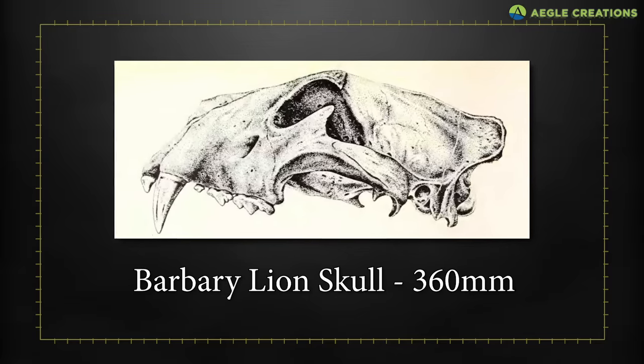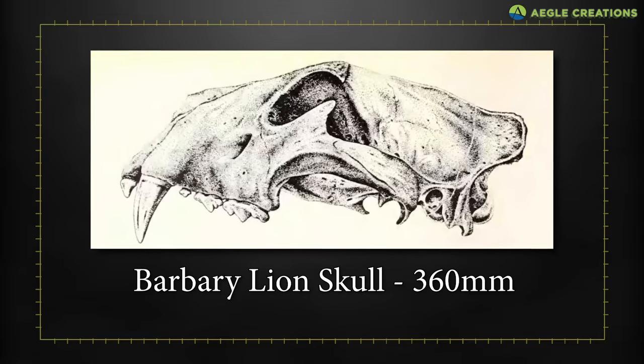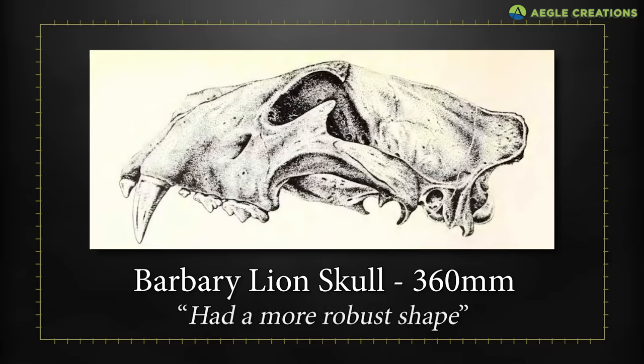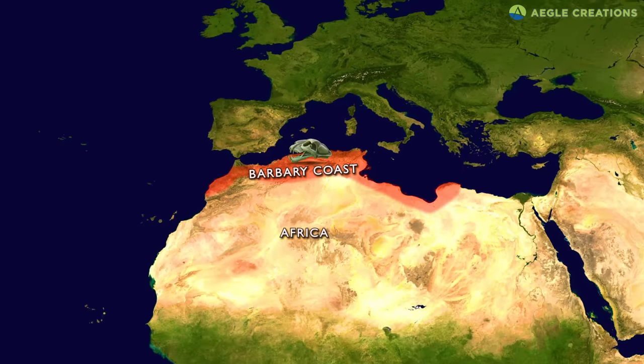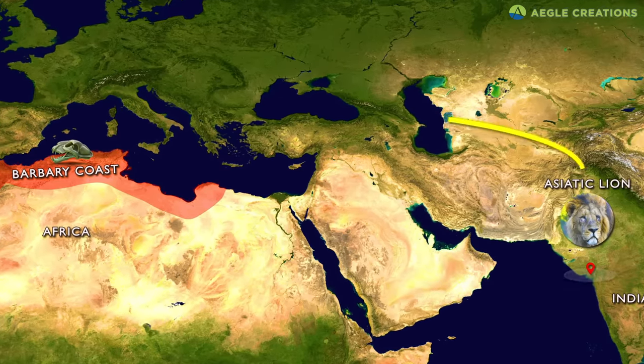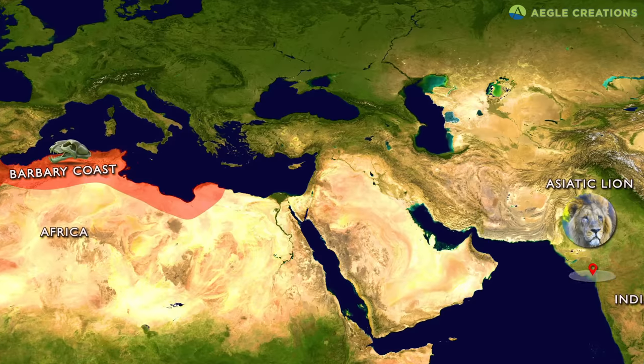Mazak also measured the skull of a Barbary lion, which had an estimated greatest length of 360 millimeters. Though large, bigger skulls of sub-Saharan lions are known to reach over 380 millimeters and even 400 millimeters. Mazak stated the skulls were similar in size to that of east African lions, but the Barbary lion skulls had a more robust shape. He further said that the Barbary skulls had characteristics similar to Asiatic lions, suggesting a closer relation between north African lions and Asiatic lions.